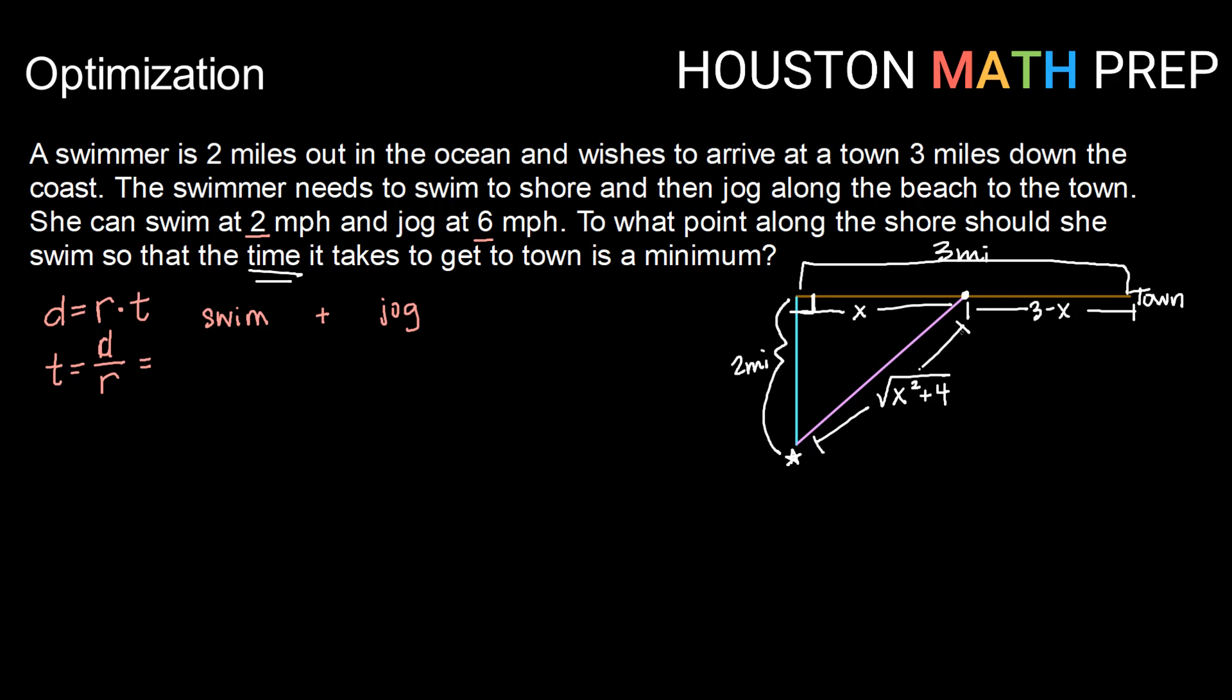So for swimming, the distance that she would be swimming would be the square root of x squared plus four. The rate that she can swim, we are given as two miles per hour. So there will be some time where she's swimming, and we're going to add to that the time where she is jogging. Well, the distance that she would need to jog would be three minus x. And we're told that she can jog at a rate of six miles per hour.